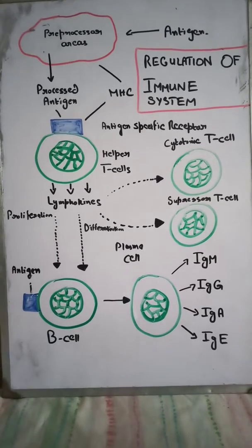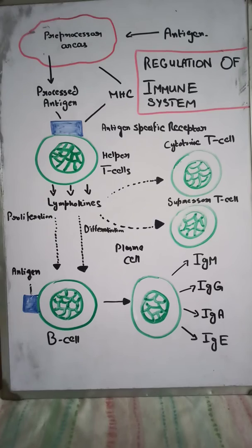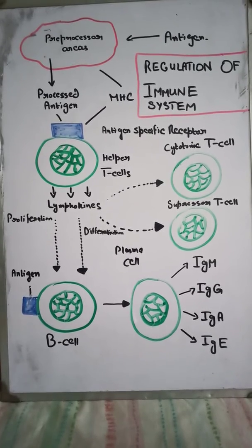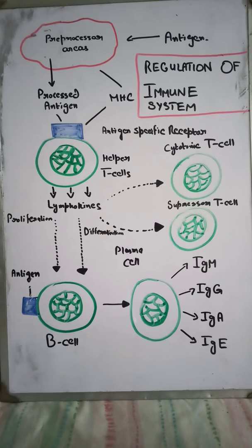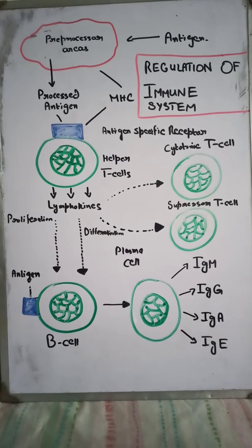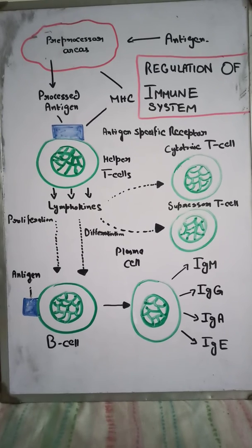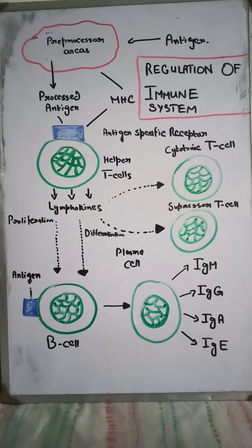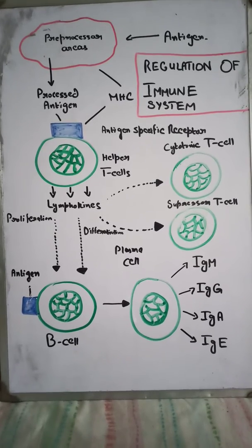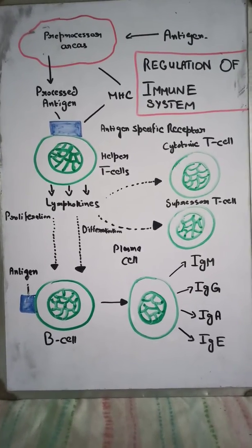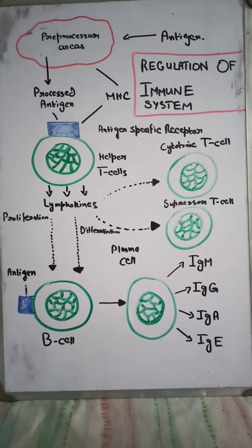Suppressor T-cells, as the name indicates, control the functions of both cytotoxic T-cells and helper T-cells. It is believed that their suppressor function serves the purpose of preventing cytotoxic T-cells from causing excessive immune reactions that might be damaging to the body's own tissue. Therefore, suppressor T-cells are the major regulatory cells of our immune system, and this is how the immune system is maintained in our body.